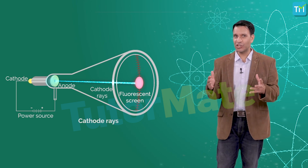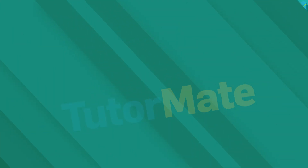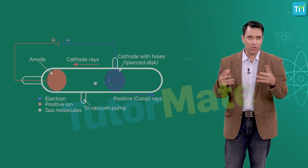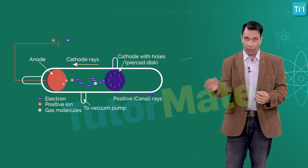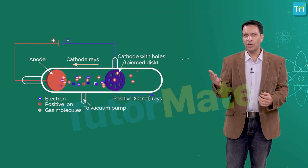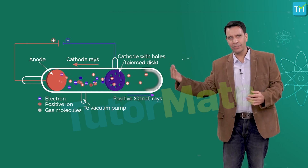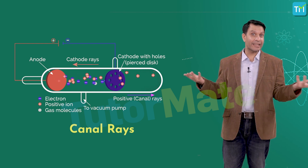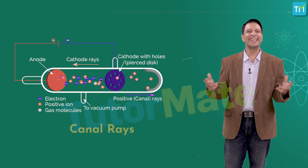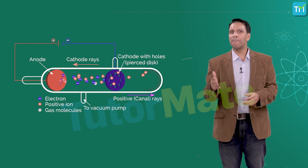That is how Sir J.J. Thomson discovered electrons. Now let's look at how protons came to the fore. In 1886, E. Goldstein, while performing experiments with a discharge tube containing a perforated cathode, observed that while cathode rays travel from cathode to anode, there are some other luminous waves traveling from the anode to the cathode. He called these canal rays.